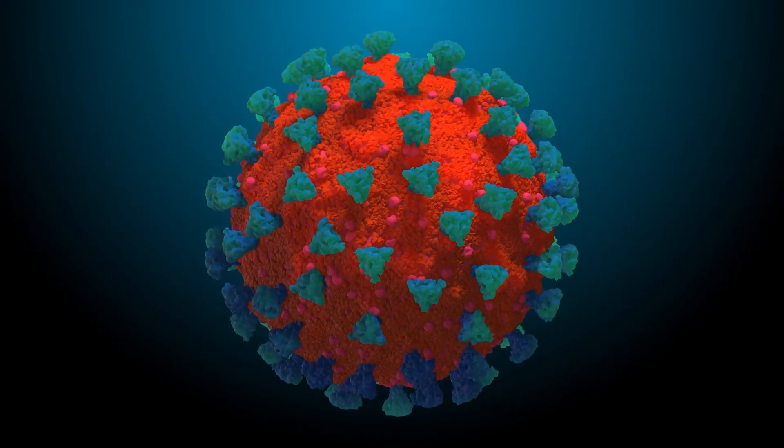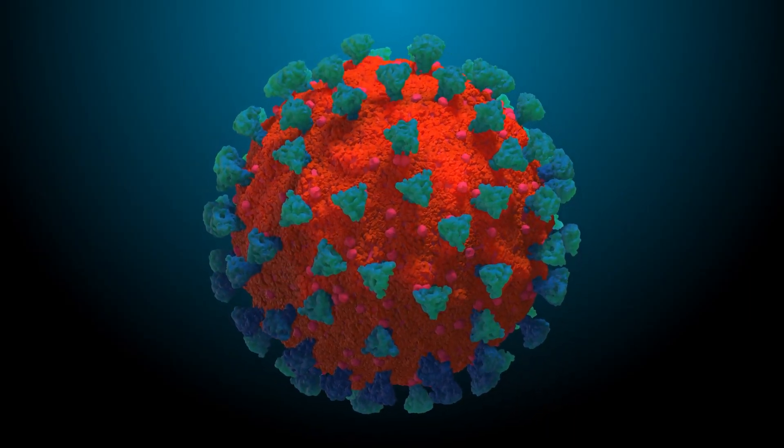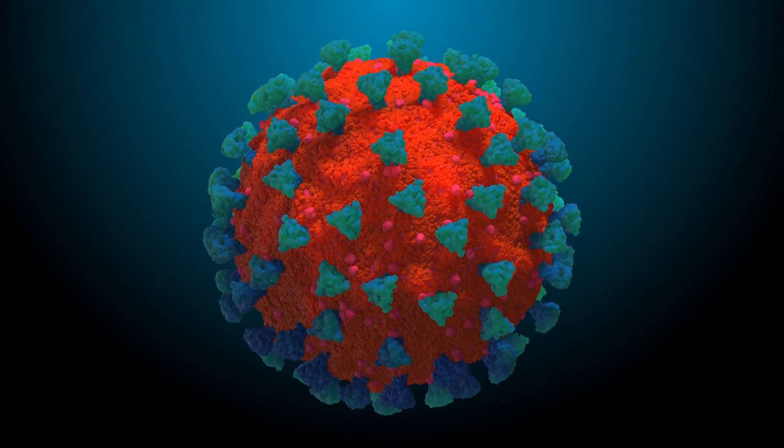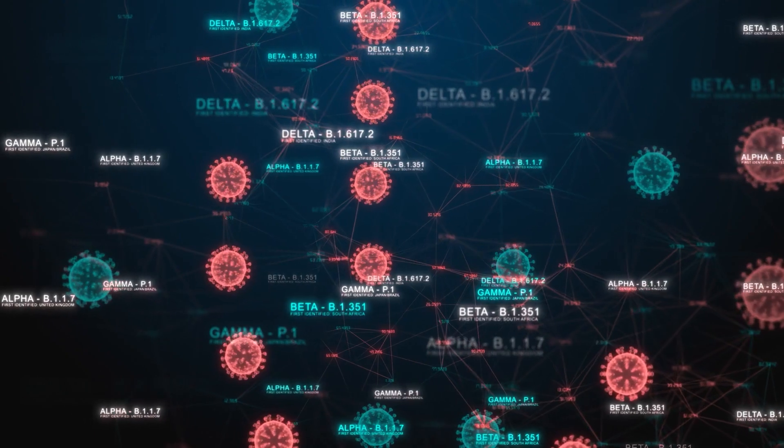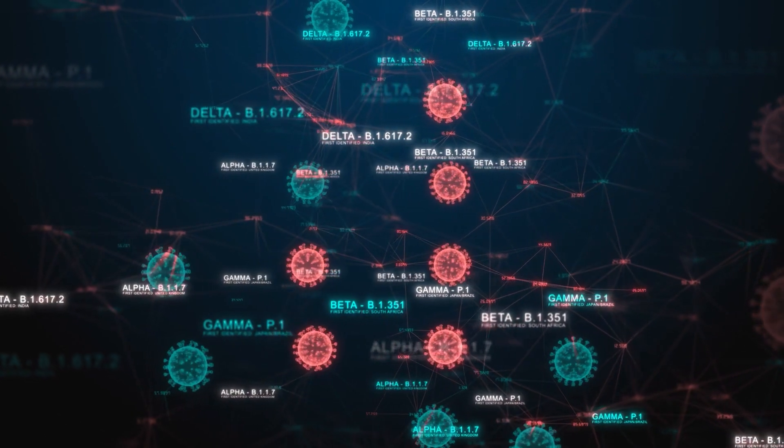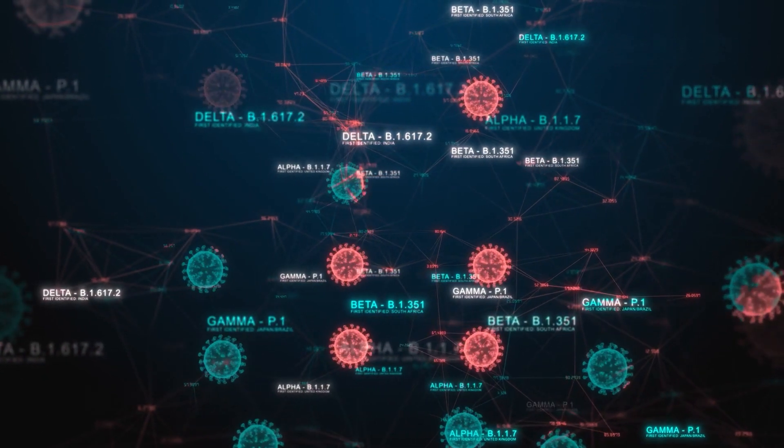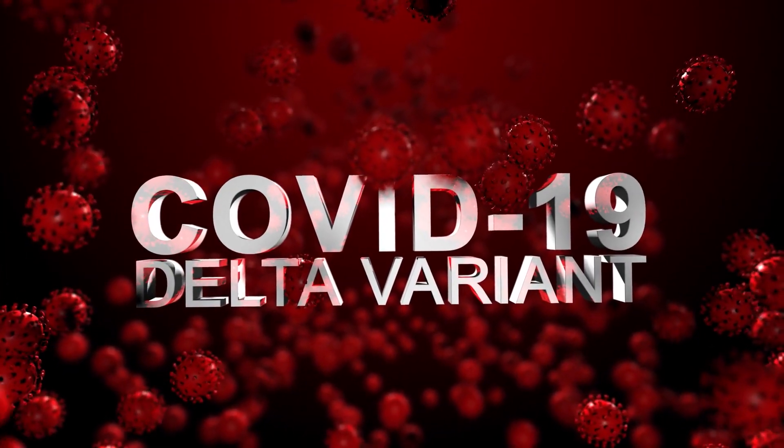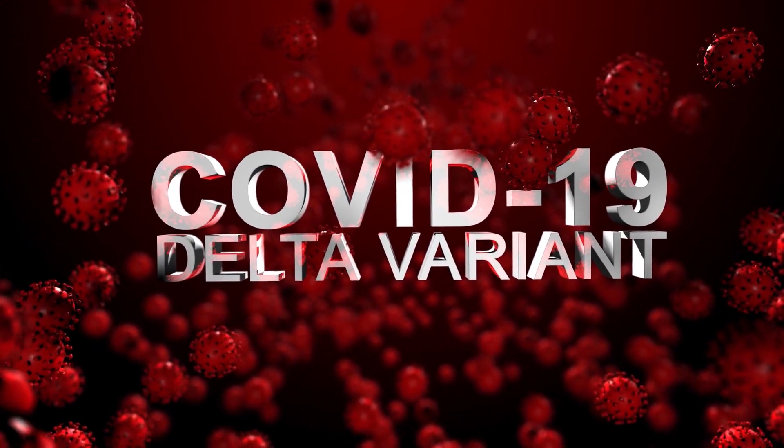It is even faster than Delta, yet deemed to be less severe, especially among the vaccinated. Its ability to spread quickly is associated with mutations that can dodge vaccine protection and natural immunity. However, following other preventive measures can still work against the variant.